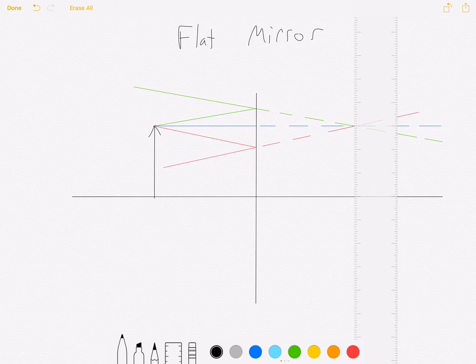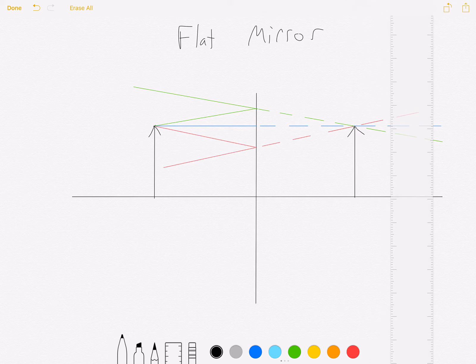And we can see that the height of our image matches the height of our object, which is about three units, and it's also going to have left-right symmetry as well. So pretty much every flat mirror diagram is going to follow those basic rules.